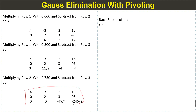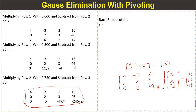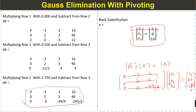Now we apply back substitution to find the values of the unknowns. We rewrite the system in the form Ax = B. The coefficient matrix has entries 4, 0, 0 in the first row; -3, 2, 0 in the second row; and 2, 3, -49/4 in the third row. The right-hand side vector is 16, 46, and -245/2. Multiplying through and simplifying each row gives the unknown values.